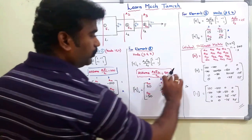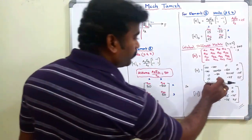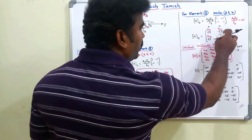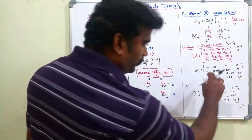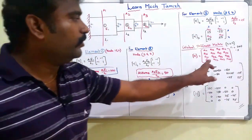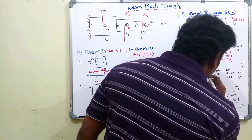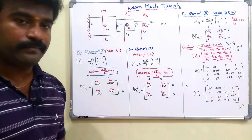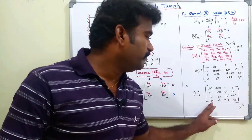Element 1 contributes to positions (1,1), (1,2), (2,1), (2,2) with values 100, -100, -100, 100. At position (2,2), element 1 gives 100 and element 2 gives 50 — you add both values, giving 150. Element 2 also contributes to (2,3), (3,2), and (3,3). Element 3 contributes to (3,3), (3,4), (4,3), (4,4); at (3,3) you add element 2's 50 and element 3's 25 to get 75. Positions like (1,3), (1,4), (2,4) have value 0. The simplified global matrix values are: 100, -100, 0, 0; -100, 150, -50, 0; 0, -50, 75, -25; 0, -25, -25, 25.